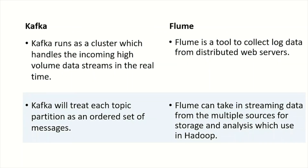Kafka treats each topic partition as an ordered set of messages. In Kafka, each topic has partitions, and within those partitions the messages are sent and received in an ordered set. Flume can take in streaming data from multiple sources for storage and analysis, and is used with Hadoop — it takes data from multiple sources and stores it at a centralized place for use by Hadoop.